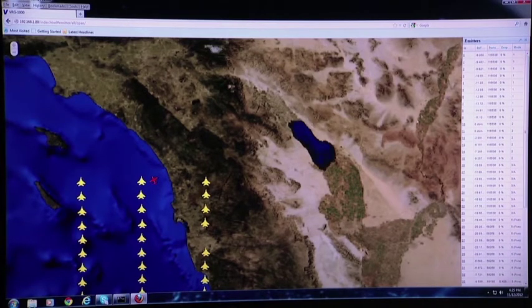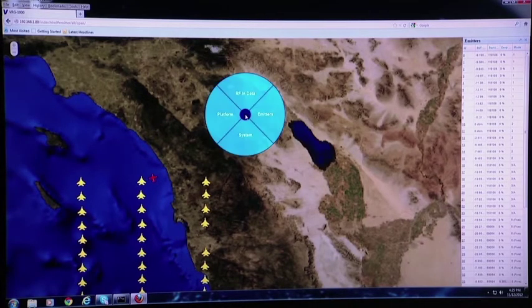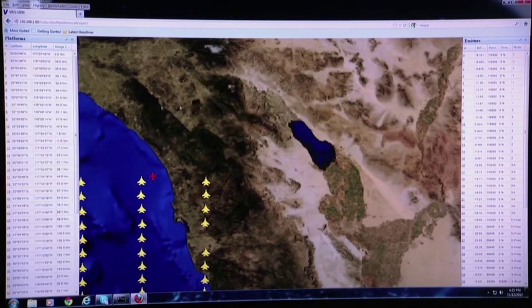We also can display platform parameters. These are all the 50 platforms with their latitude, longitude, and their relative range to the system under test.